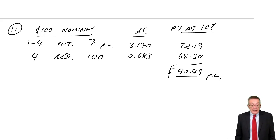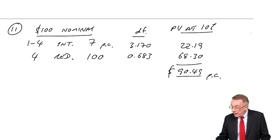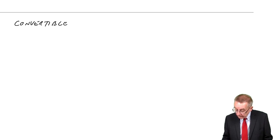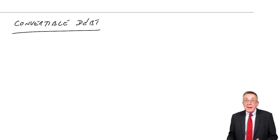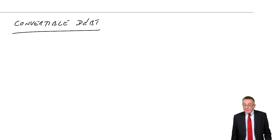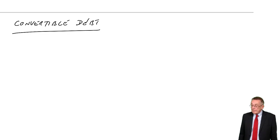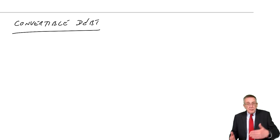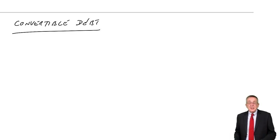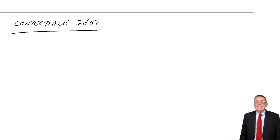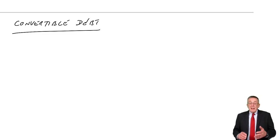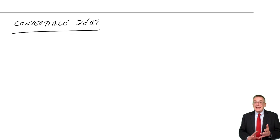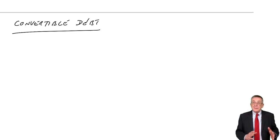Let's make this slightly more interesting — still redeemable debt, but suppose it's convertible. Convertible debt was explained in an earlier chapter when we were looking at sources of finance. It's debt where at the end of the period — maybe in four years or ten years — when it comes time for repayment, the investor has the choice of taking cash or a fixed number of shares.